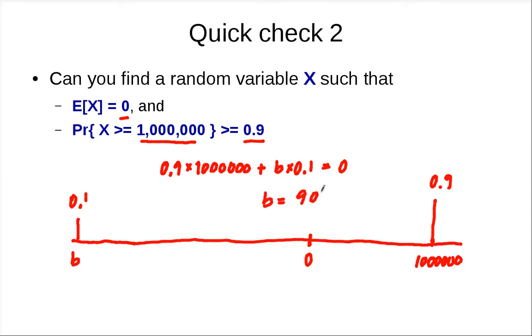If you solve it, B is about negative nine million. So you have a random variable X where X = 1,000,000 with probability 0.9 and X = -9,000,000 with probability 0.1, giving E[X] = 0.